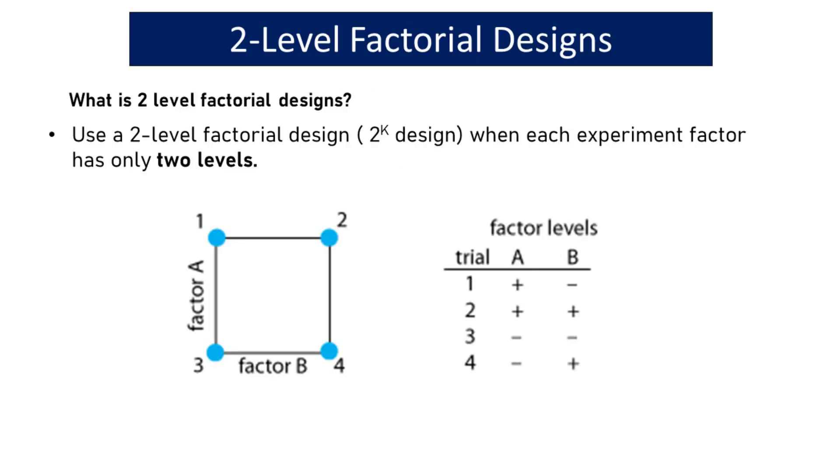A two-level factorial design is a powerful tool for researchers looking to efficiently study the impact of multiple factors at two levels each. This design allows for the identification of significant factors and how they interact with each other. By systematically varying the levels of each factor, researchers can observe the main effects of individual factors as well as any interactions between factors. This approach is particularly useful when there are limited resources or time constraints, as it allows for the simultaneous testing of multiple factors.